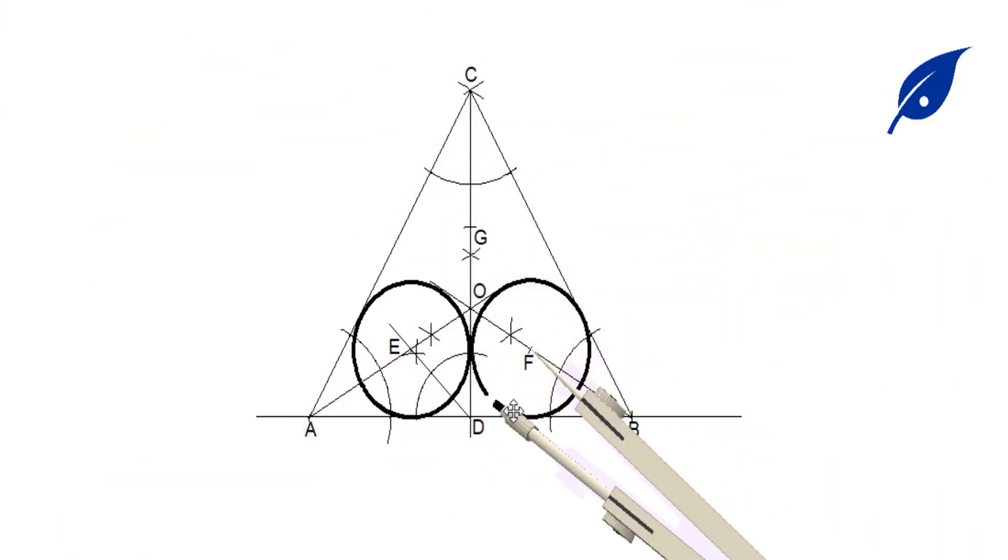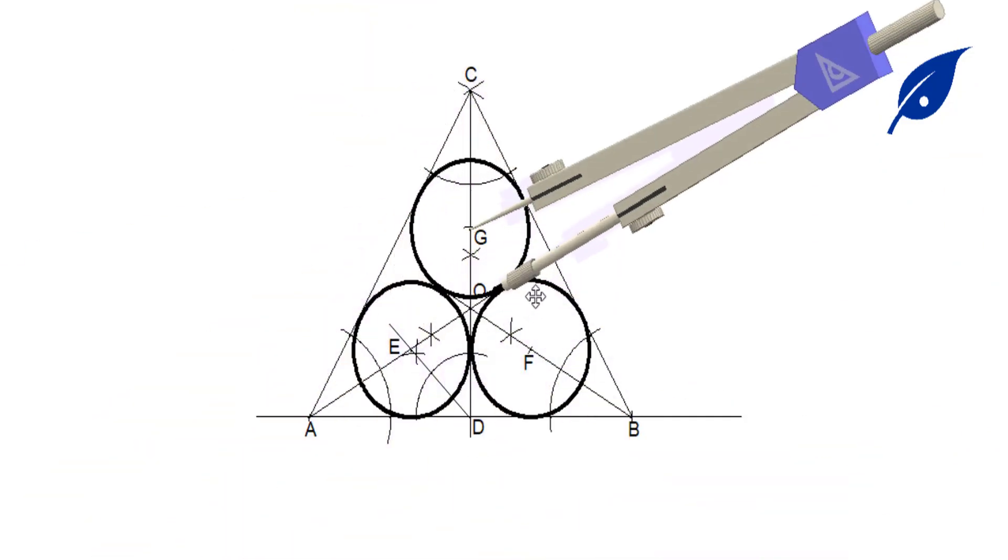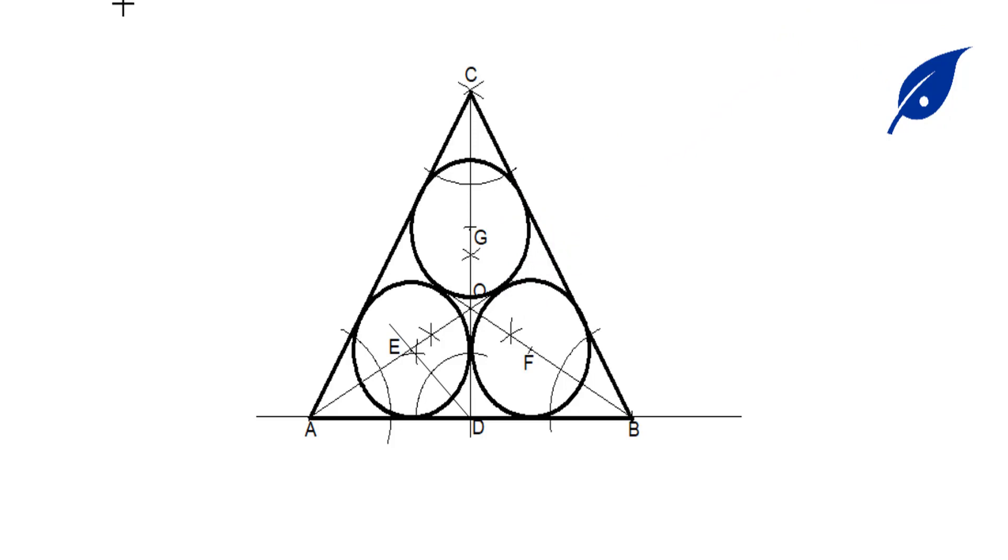We'll draw the circle at F, then put the compass at G to get another circle. At this point we've gotten the three circles, each touching two other circles and two sides of the triangle.